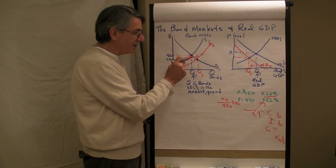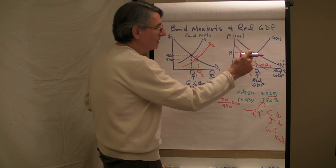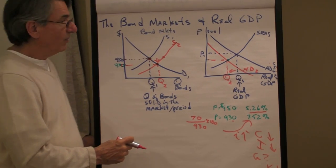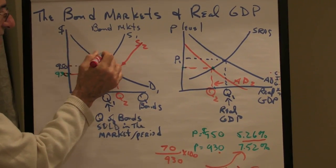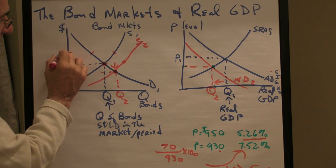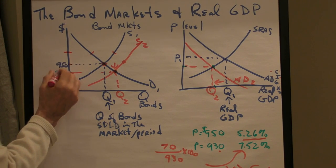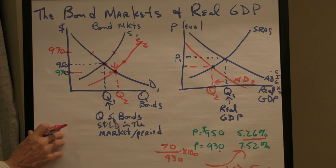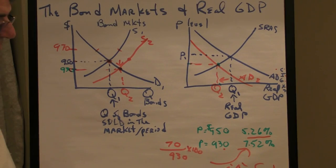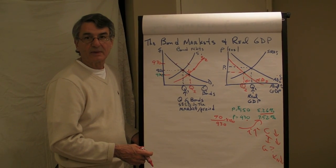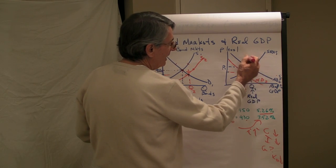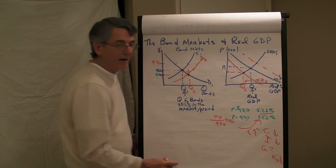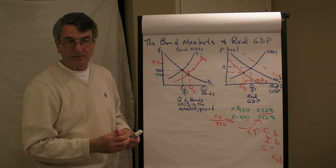So bond prices, interest rates, real GDP. What if instead of the supply increasing, maybe the supply decreased or the demand increased, and we ended up with a bond price of $970? Well, in the previous page here, we saw that that interest rate was 3%. If interest rates had gone down, then aggregate demand would have shifted rightward, and real GDP would have gone up.